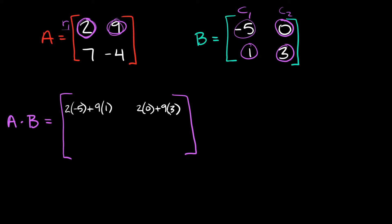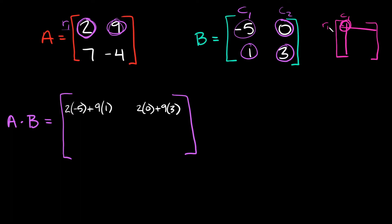Just in case you're confused as to where we're supposed to fill this out, one way you can think about it is since both of these are two by twos, we can draw a two by two. We started with row one, column one, right? Row one and column one intersect at the top left, so that's why we filled it out there first. Then we went to row one, column two, and row one, column two intersect in the top right, so that's why we filled it out in the top right.